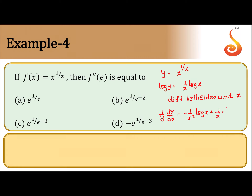Plus 1 by x, and the derivative of log x is 1 by x. So we get 1 by y dy by dx equal to minus 1 by x square log x plus 1 by x square. Now what we do is differentiate again with respect to x.